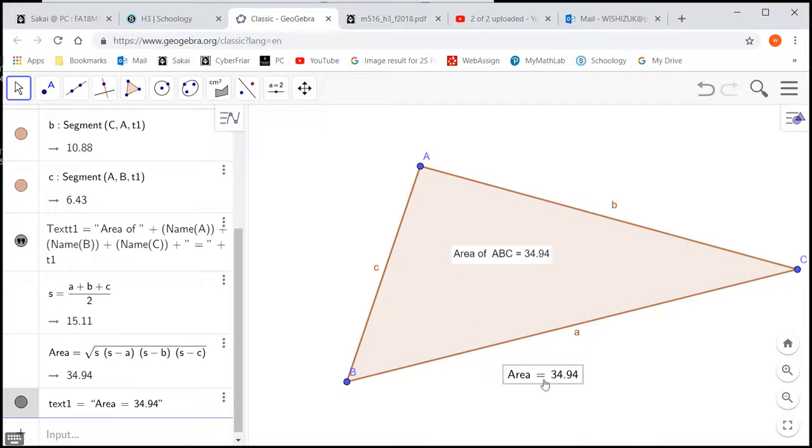We can check. You can see that the area comes out to be exactly the same. This is from the GeoGebra computation. This is from Heron's formula. The values are exactly the same.